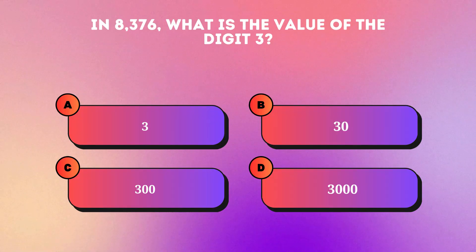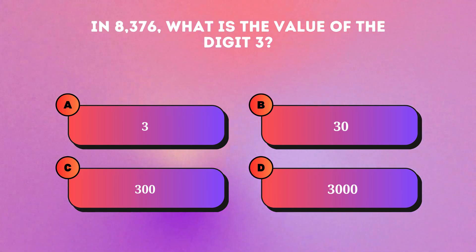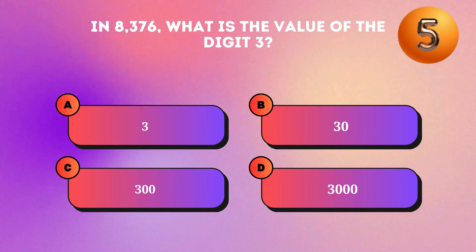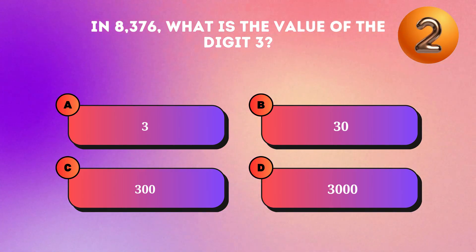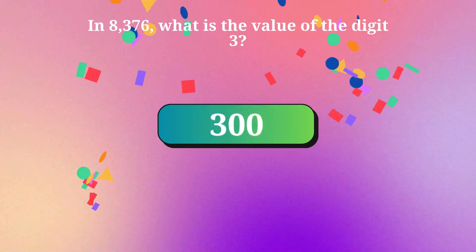In eight thousand three hundred and seventy-six, what is the value of the digit three? Three hundred.